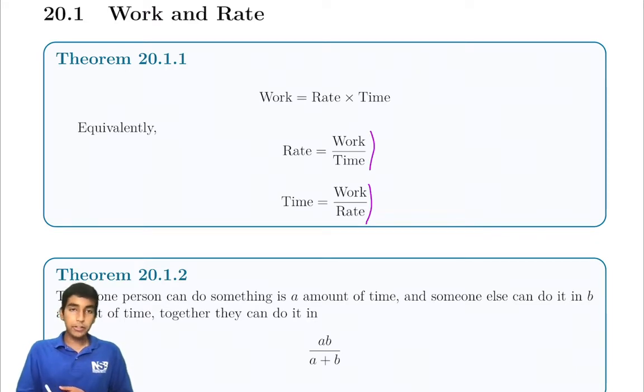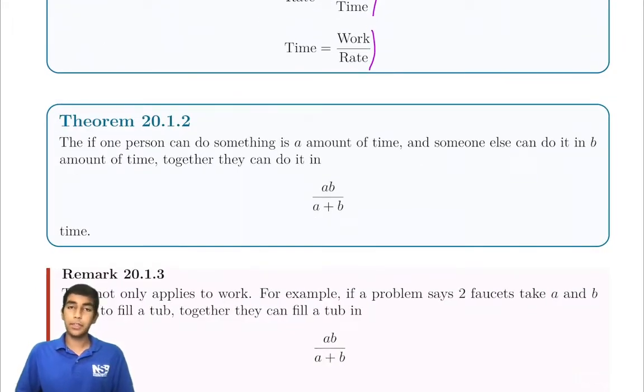So now here's a cool, interesting theorem. If one person can do something, some task, in A amount of time—let's say it's A hours—and someone else can do it in B hours, together they do it in this much amount of hours, or whatever other time unit you're using. It can be seconds, minutes, years, decades, whatever. It doesn't even matter.